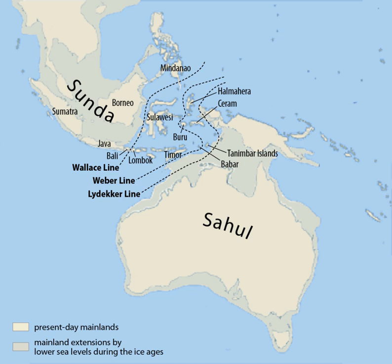Rainfall exceeds evapotranspiration throughout the year and there are no predictable dry seasons like elsewhere in Southeast Asia. The warm and shallow seas of the Sunda shelf, averaging 28 degrees Celsius or more, are part of the Indo-Pacific warm pool and Western Pacific warm pool, and are an important driver of the Hadley circulation and the El Niño–Southern Oscillation, particularly in January when it is a major heat source to the atmosphere. ENSO also has a major influence on the climate of Sundaland; strong positive ENSO events result in droughts throughout Sundaland and Tropical Asia.